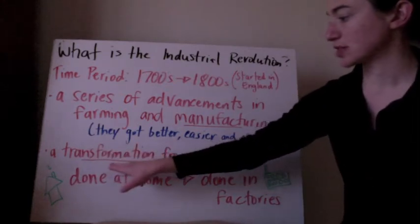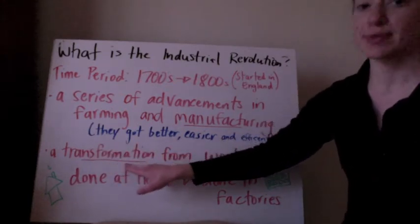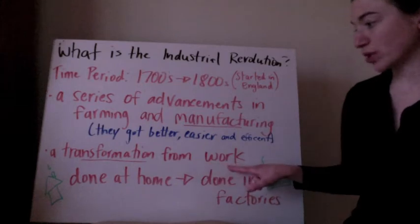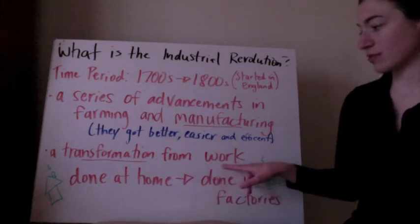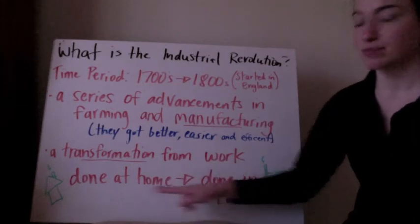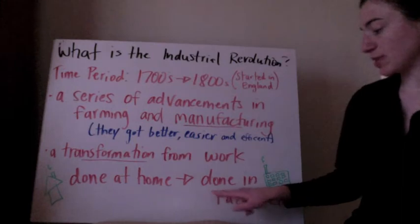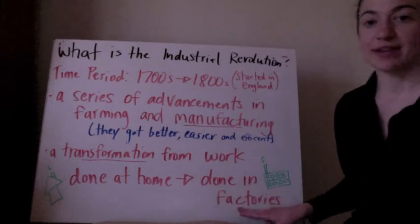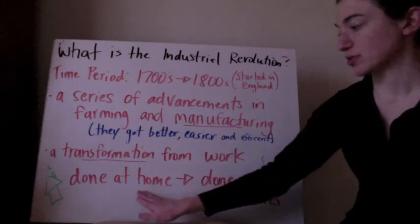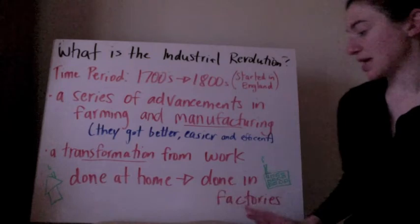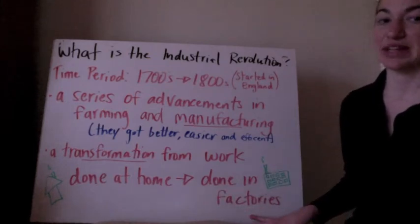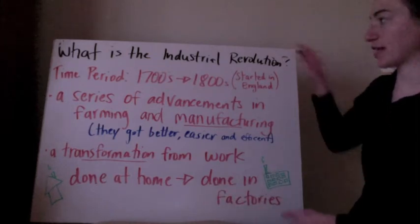The Industrial Revolution is going to be a transformation — a change from work being done at home, making things in your home, to being done in factories. So things were mostly made at home before, and after the Industrial Revolution, most things are going to be done in factories.